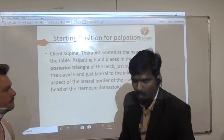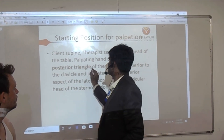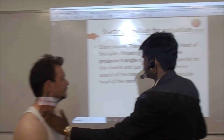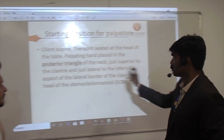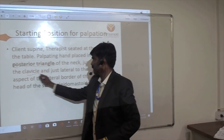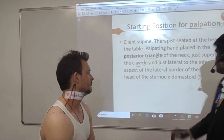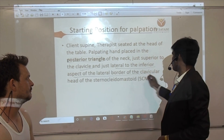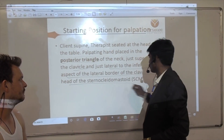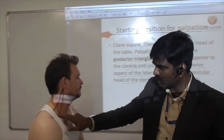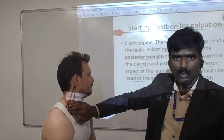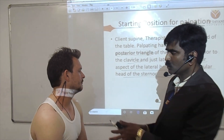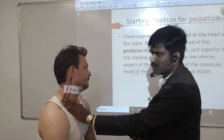You should place your hand on the posterior triangle, just superior to the clavicle and just lateral to the inferior aspect of the clavicular head of the sternocleidomastoid. This is the place to palpate the scalene muscles.